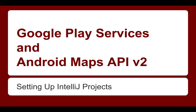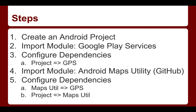This video tutorial will show you how to use Google Play Services Library, the Android Maps API version 2, in an IntelliJ project. The steps are: first, create an Android project; second, import the Google Play Services Library as a module; third, configure the dependency between the project and the Google Play Services Library; then import the Android Maps Utility from GitHub; and finally, configure the dependencies between the Maps Utility, the Google Play Services Library, and the project.